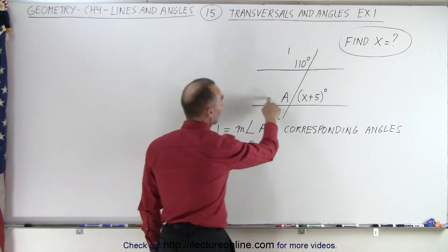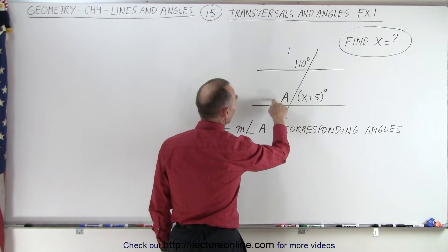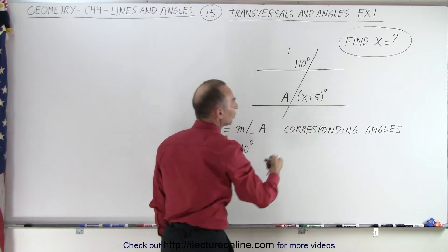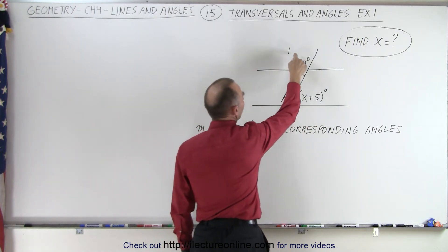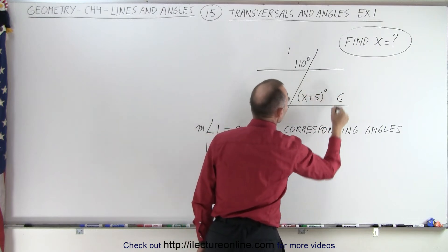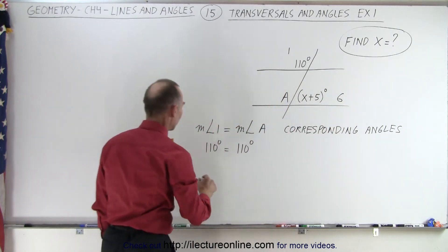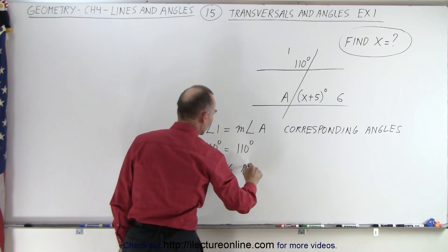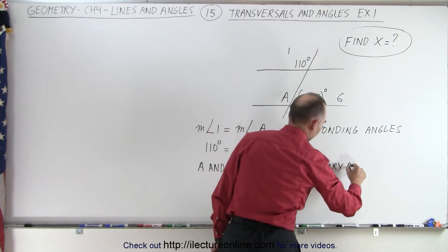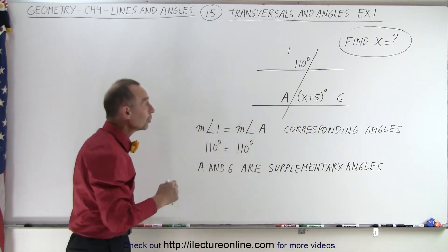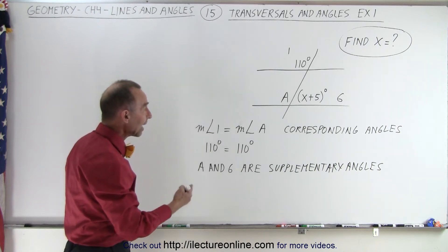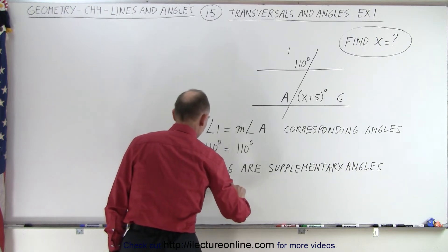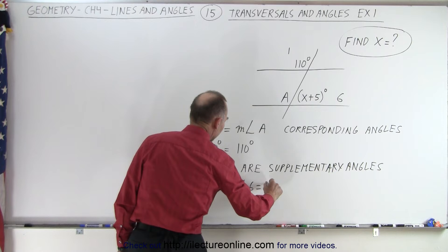Now we can look at these two angles right here, and notice that these are adjacent angles. They have a common ray, so we can say that angle A and the angle that has a measure of x plus 5 — let's call this angle 6 — are supplementary angles. And if they're supplementary angles, then we know that their angle measures must add up to 180 degrees. So the measure of angle A plus the measure of angle 6 add up to 180 degrees.